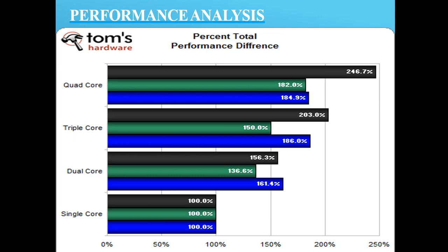Overall, the highest performance belongs to the quad core and the lowest to the single core. According to the diagram, quad core has top performance in the category of synthetics.